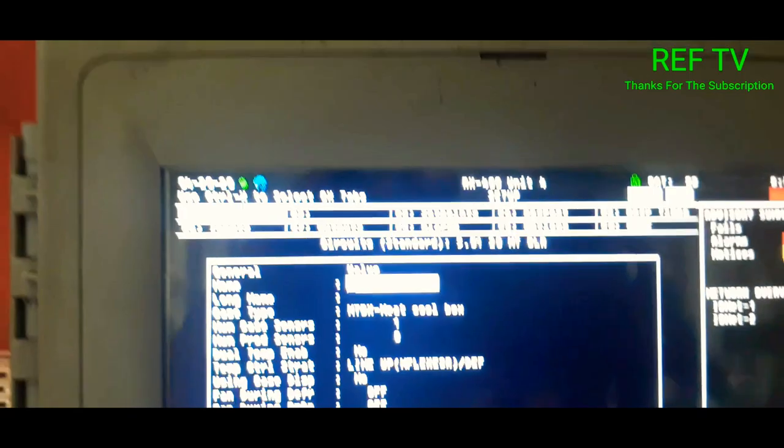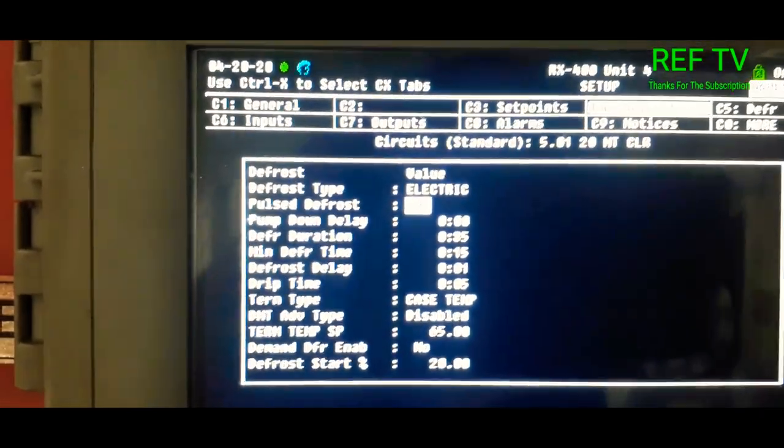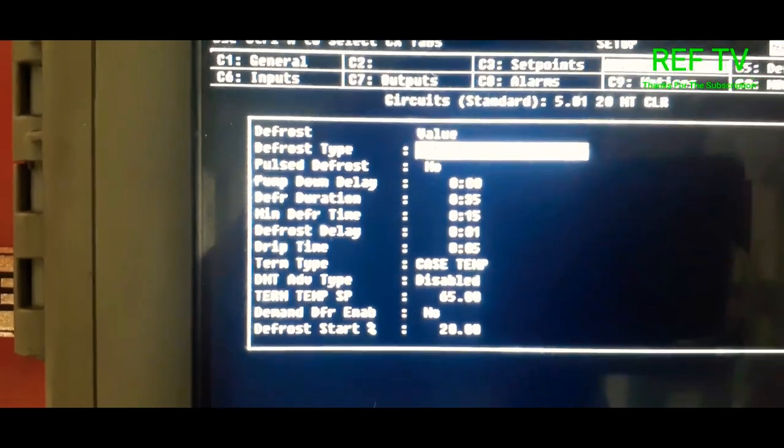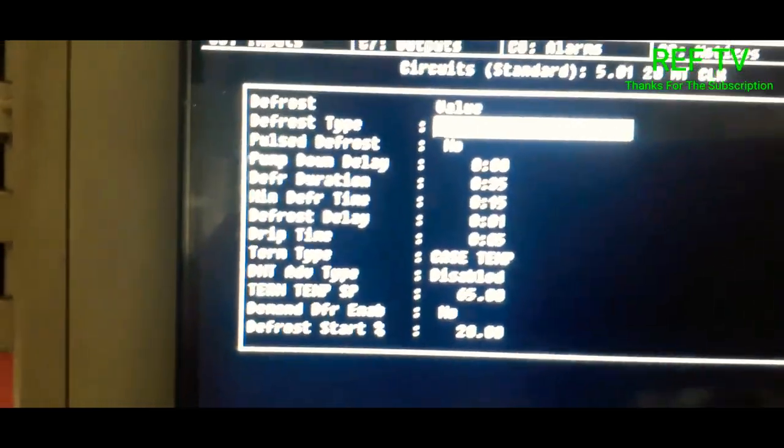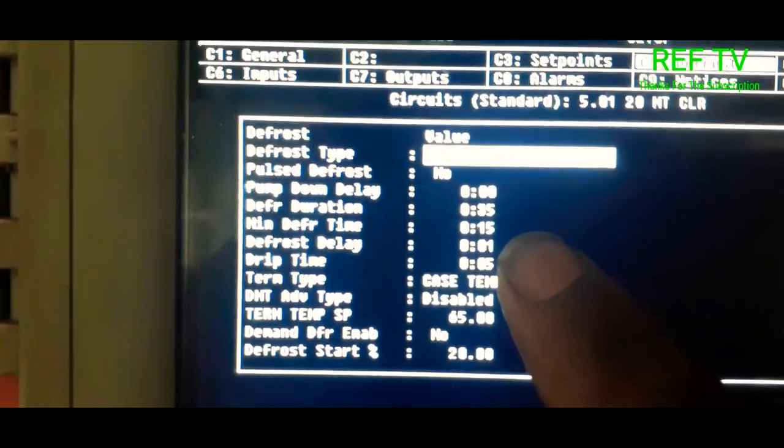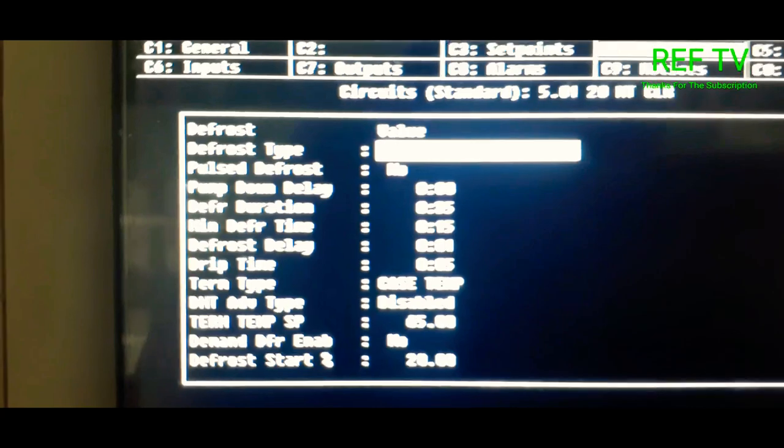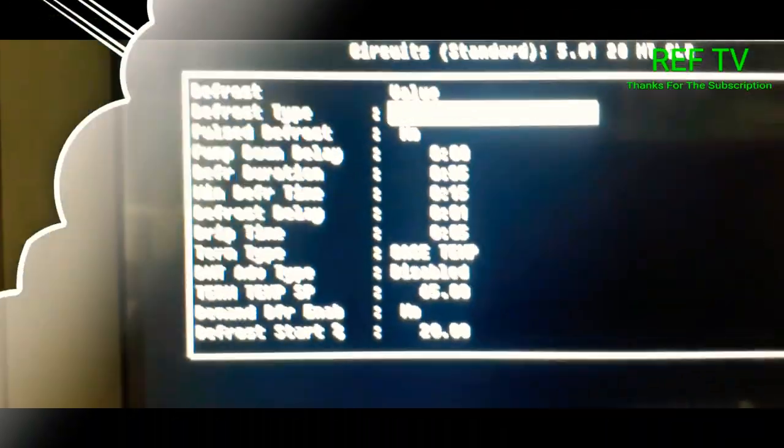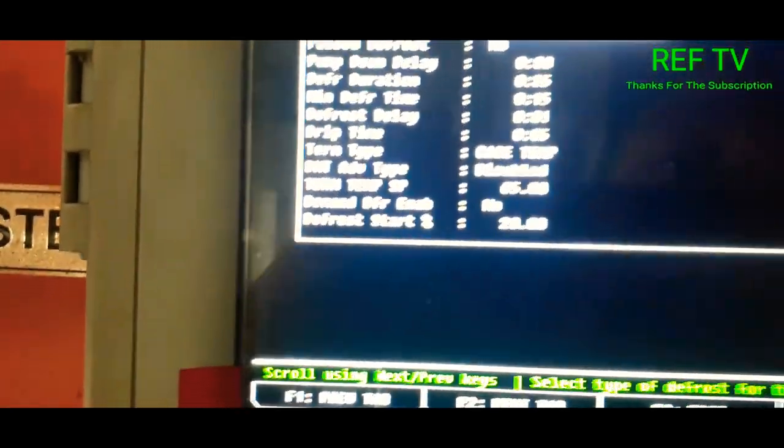Check our setup. We're set up for electric heat, 35 minute duration, 15 minute minimum, one minute defrost delay with a five minute drip. Set the terminator on case temp of 65 degrees. Let's just go and check our heaters.